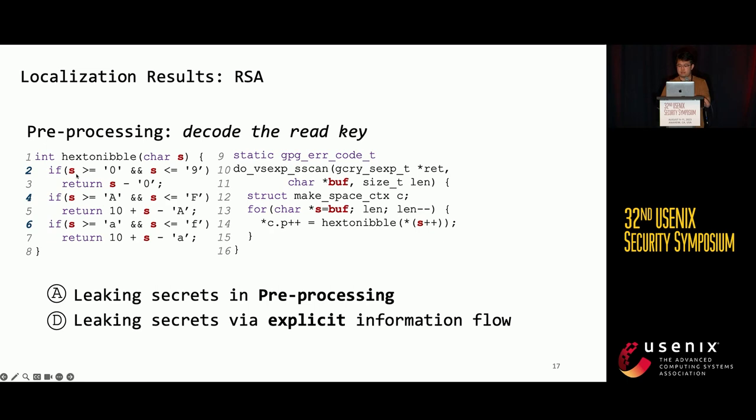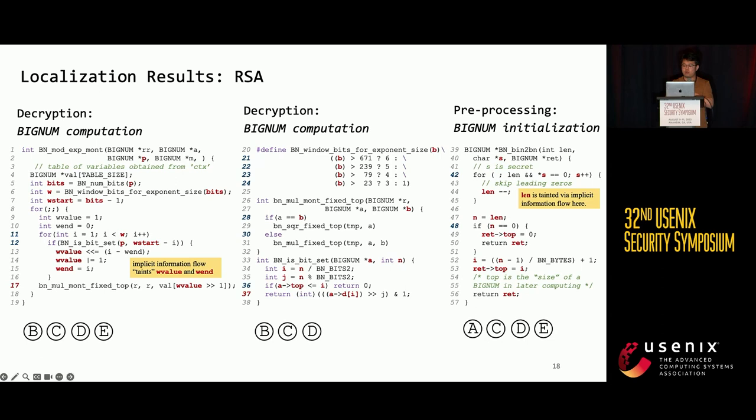After decoding the key, the program initializes big numbers for later computations. During initialization, the number of leading zeros of each big number is leaked. Later, when doing decryption using these big numbers, there are many control branches that depend on the key bits. For example, in the 20th line in the middle figure, and also in the left figure, the memory read in the 17th line also depends on the value of the key bits.